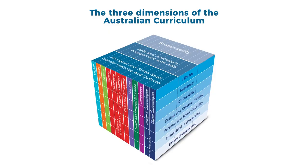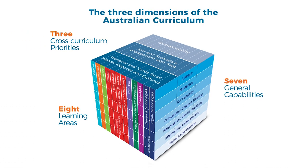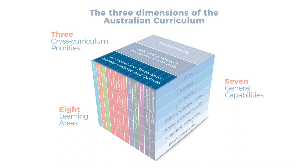As many of you would be aware, the Australian Curriculum is three-dimensional. We have the eight key learning areas, seven general capabilities and three cross-curriculum priorities. One of those cross-curriculum priorities is called Aboriginal and Torres Strait Islander histories and cultures. Why is this a cross-curriculum priority and what does it mean in practical terms for teachers and students?